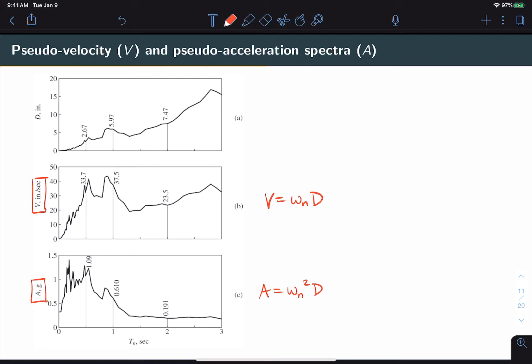You might recall that for pseudo-acceleration, we obtain this from the equivalent static force discussion. Now, these spectra do not present any new information. However, they are convenient ways of visualizing different aspects of the response. We know, of course, that D corresponds to the maximum displacement of our structure. V is related to the maximum strain energy in our system. And pseudo-acceleration is proportional to our maximum base shear, which again we brought up in the equivalent static force discussion.